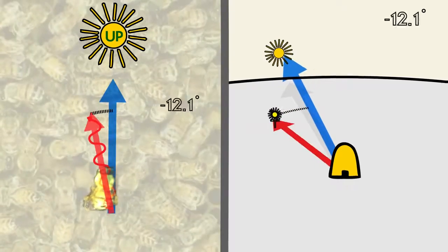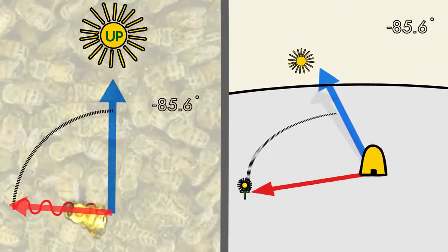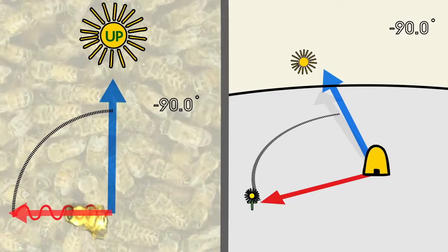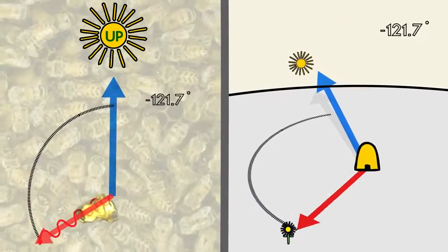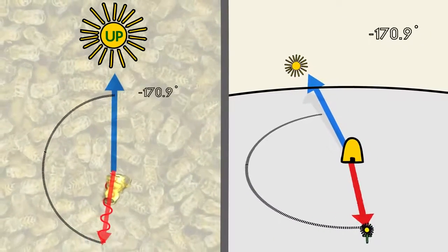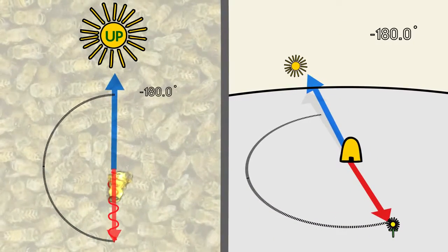If a bee dances 90 degrees to the left, then bees leaving the hive should fly 90 degrees to the left of the sun. A bee angling its dance towards the ground will let others know to fly directly away from the sun.